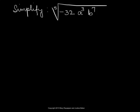So take the radicand, negative 32 a cubed b to the seventh.